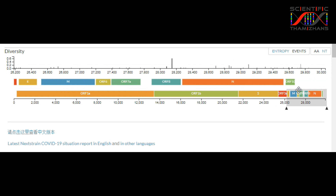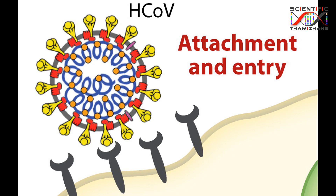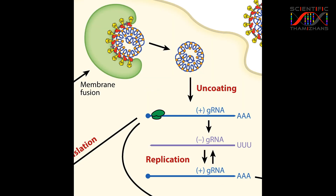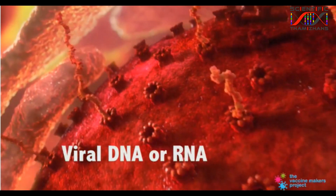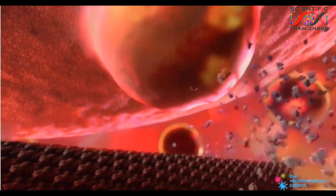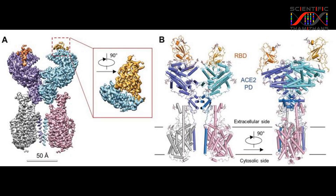This virus is not a cell. It needs to enter a host cell and use it. Once inside, it produces various proteins — both structural proteins and non-structural proteins. These include proteins known as PP1A and PP1AB, which are cleaved into non-structural proteins.